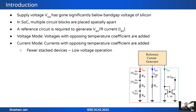The current reference is used as shown here: multiple copies of the reference current are transported to various circuit blocks, where voltage and current references are generated locally. A current reference circuit is required that generates VBG/R current, referred to as IBG. This can be implemented in two ways: voltage mode, where voltages with opposing temperature coefficients are added, and current mode, where currents with opposing temperature coefficients are added.